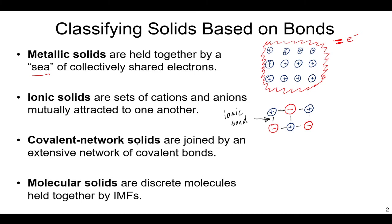Covalent network solids are the third type. An example is diamond, where neutral atoms are bound to other neutral atoms through covalent bonds. It's easy to differentiate from ionic solids because it's simply a characteristic of the types of bonds connecting the atoms.